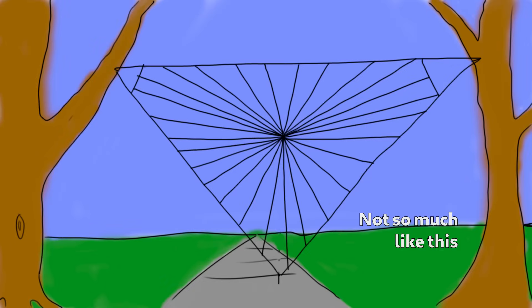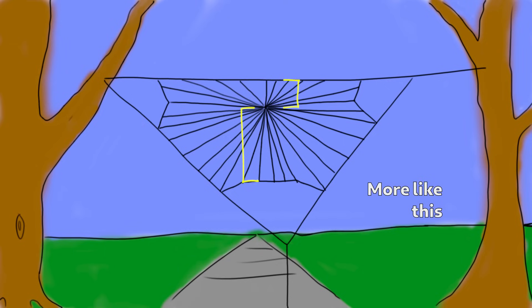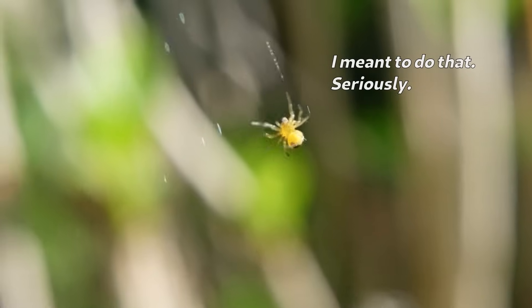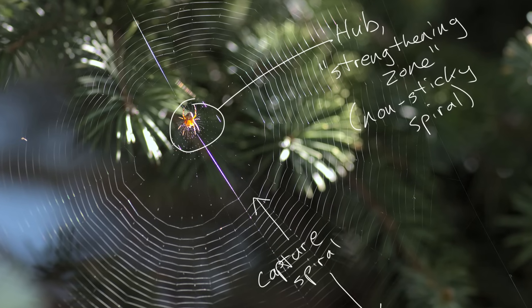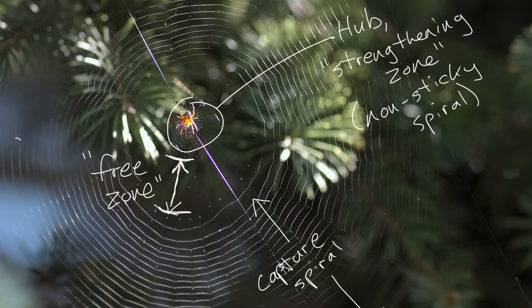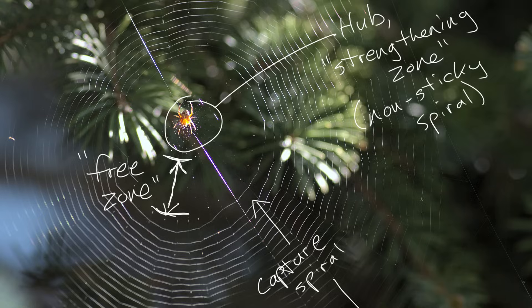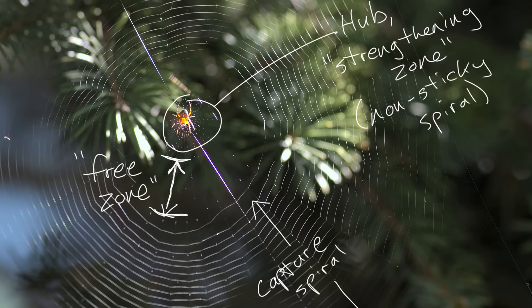Interestingly, the web is not symmetrical across a horizontal axis — the hub is usually above center. The web isn't completely a spiral: the spider knows the hub is off center, and in the bottom half actually changes direction frequently so the bottom half has more strands than the top. Right in the center is the hub and strengthening zone, which has a non-sticky spiral. Between that and the capture spiral is the free zone — where there's no spiral at all. This space allows the spider to quickly move from one side of the web to the other by ducking through the empty space between the radials.